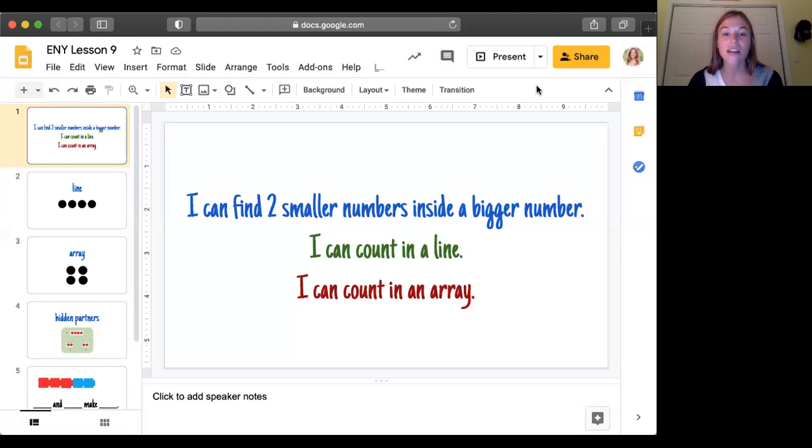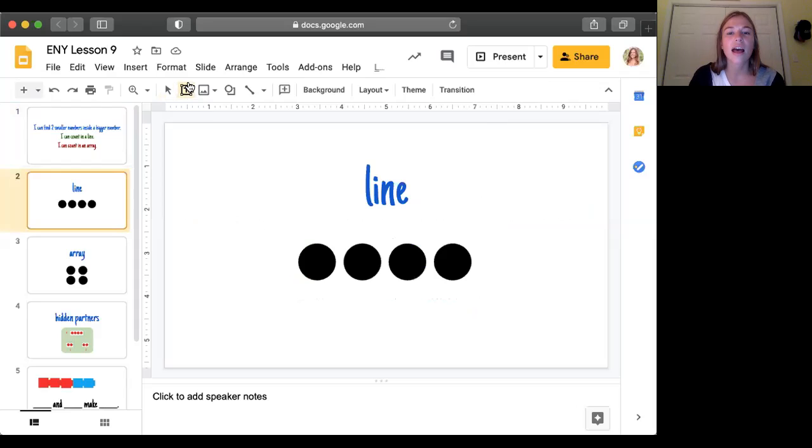I can find two smaller numbers inside a bigger number. I can count in a line. I can count in an array. All right, so we have some tricky vocab in there that we're going to go through first.